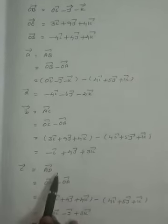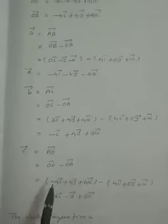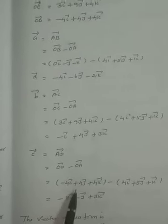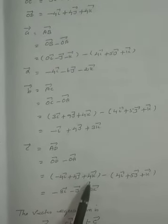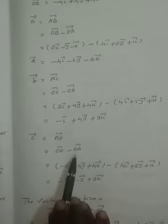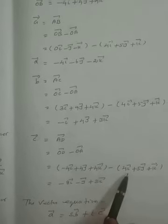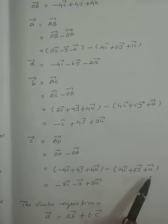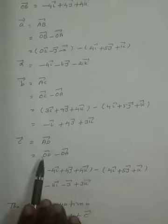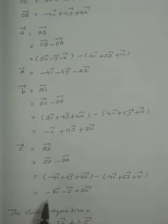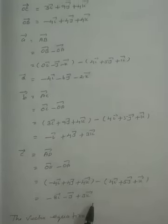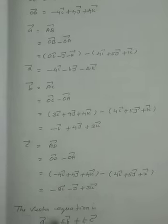AD vector equals OD minus OA. OD vector is minus 4A plus 4J plus 4K, and OA vector is 4A plus 5J plus K. Subtracting OA from OD gives AD equals minus 8A minus J plus 3K.